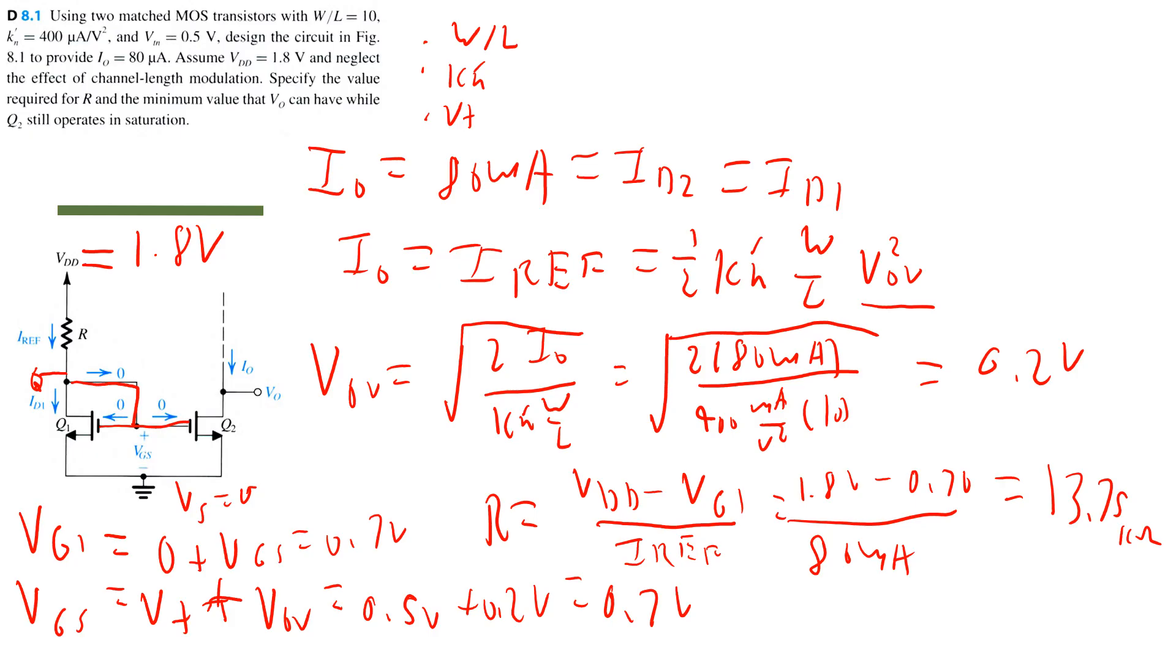Lastly, we want to find the minimum value that the output voltage can have while Q2 still operates in saturation. So how can we find this? Well, for Q2 to operate in saturation, we know that Vout must be greater than or equal to the voltage drop from drain to source.